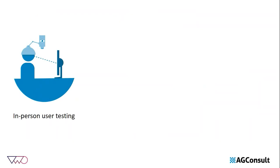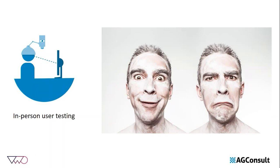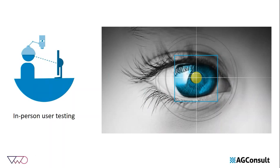In-person user testing is the old-school method, but it's still my preferred way. The moderator and the participant are in the same location — your office, the client's office, a meeting room in a hotel. The big advantage of being in the same room is that you can observe everything: not only the mouse movements, but facial expressions, body language. As a moderator you can interact on all those elements, which you can't do in a remote user test.